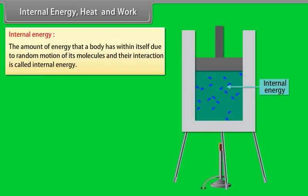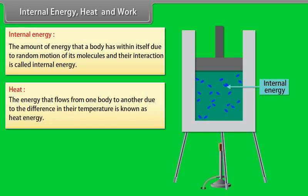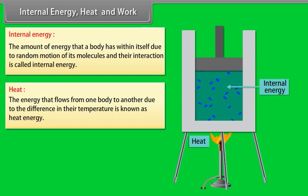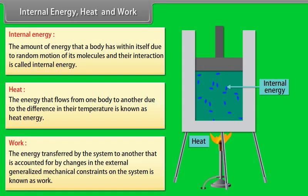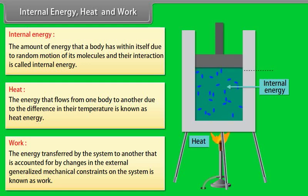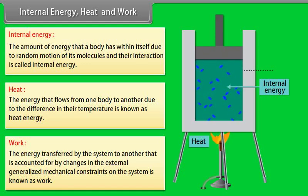The amount of energy that a body has within itself due to random motion of its molecules and their interaction is called internal energy. The energy that flows from one body to another due to the difference in their temperature is known as heat energy. The energy transferred by the system to another, accounted for by changes in the external generalized mechanical constraints on the system, is known as work.